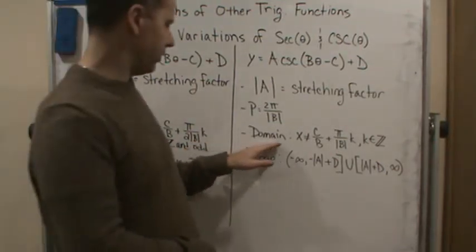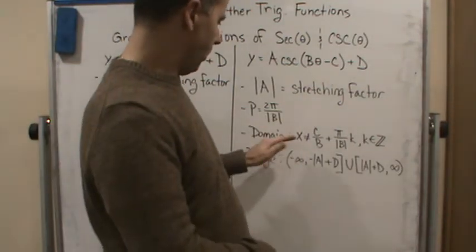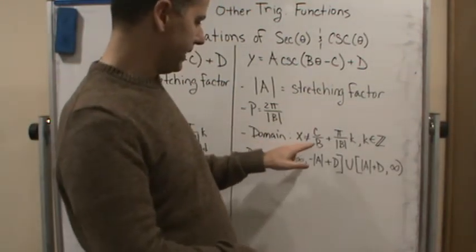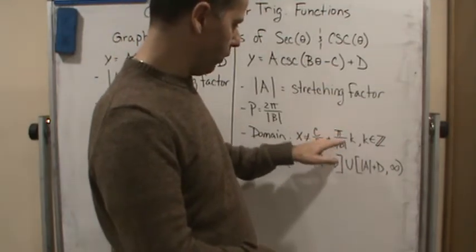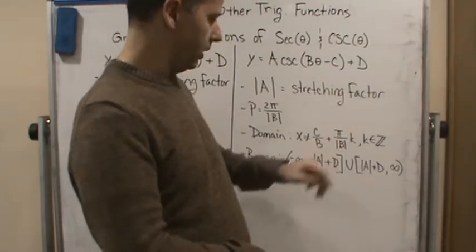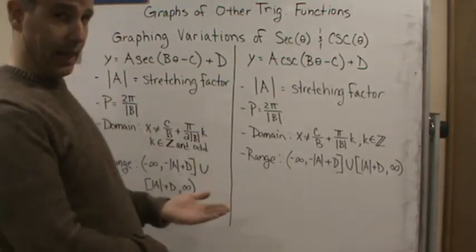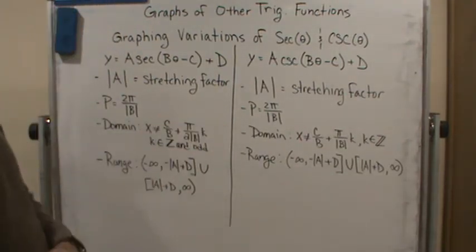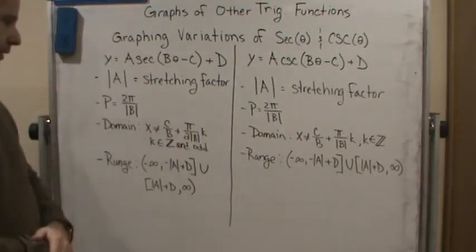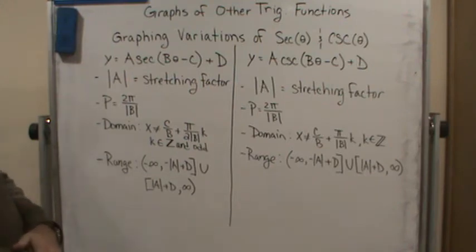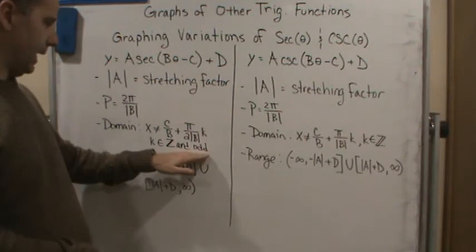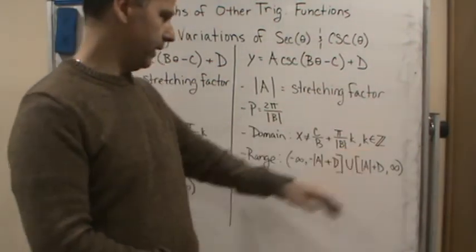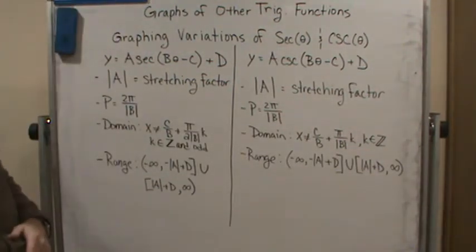Whereas for the cosecant, the domain is going to be, again, all real numbers except when x equals the ratio of c over b, but now it's just π over b times a multiple of k, where k is just an integer. Whether it's odd or even doesn't matter. That's irrelevant. Notice for secant it has to be odd. For cosecant it just has to be an integer multiple.